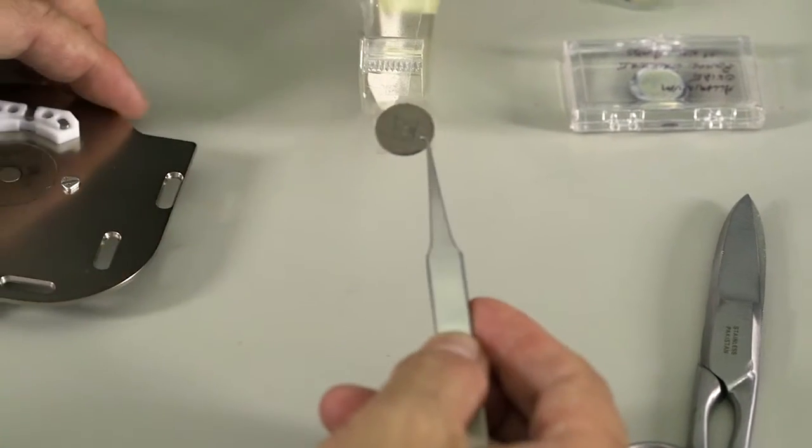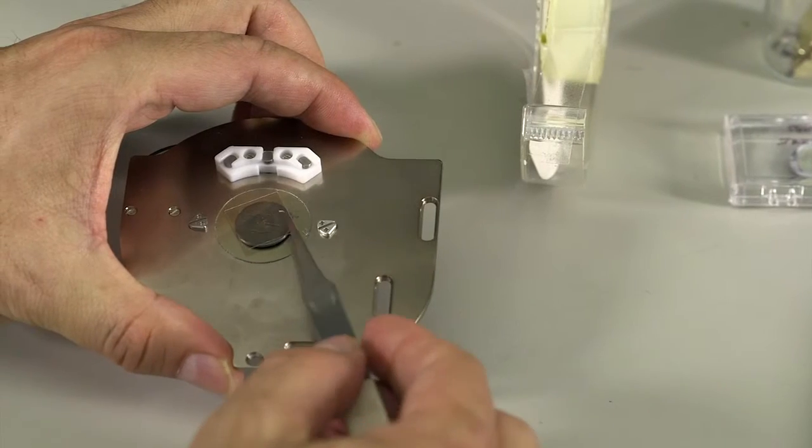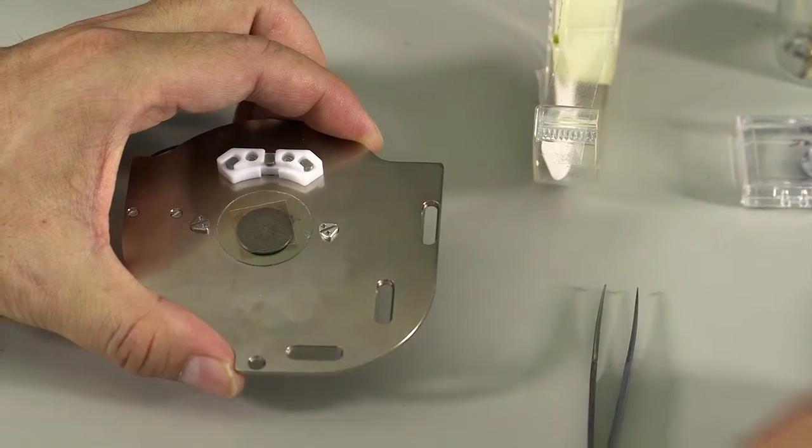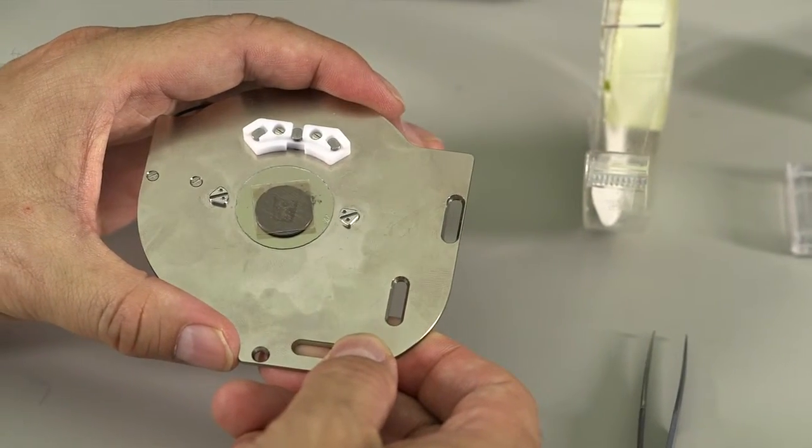Then you can pick up the steel dish with sample on it and drop on top of the sample plate. Now your sample is on the plate and ready for the next operation.